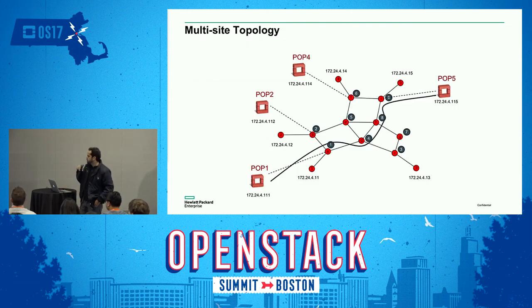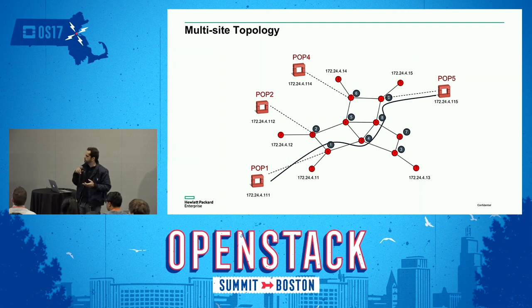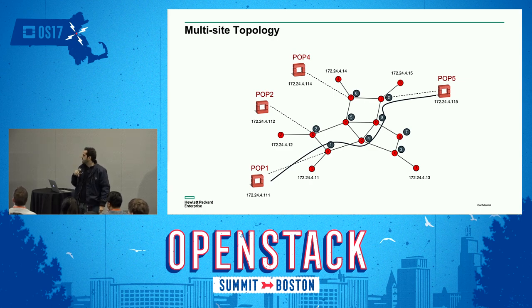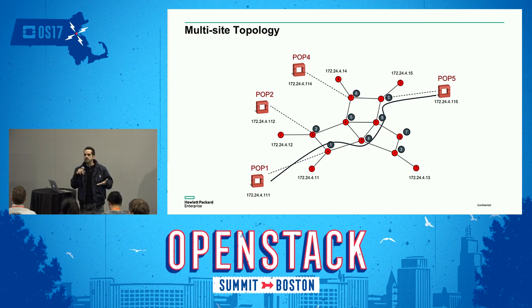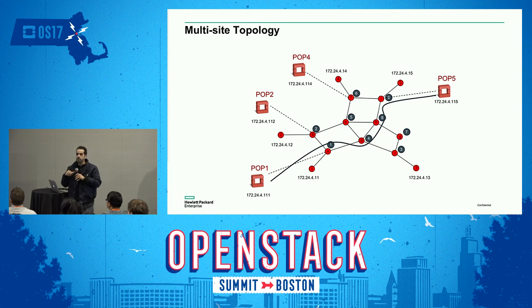We normally have this multi-site topology — in this case, four different POPs, each an independent instantiation of OpenStack. We're showcasing one underlay topology with a set of core switches used to carry traffic between the different POPs. Importantly, we are only using knowledge collected from the overlay network, without directly inspecting the underlay, to guide our traffic selection.